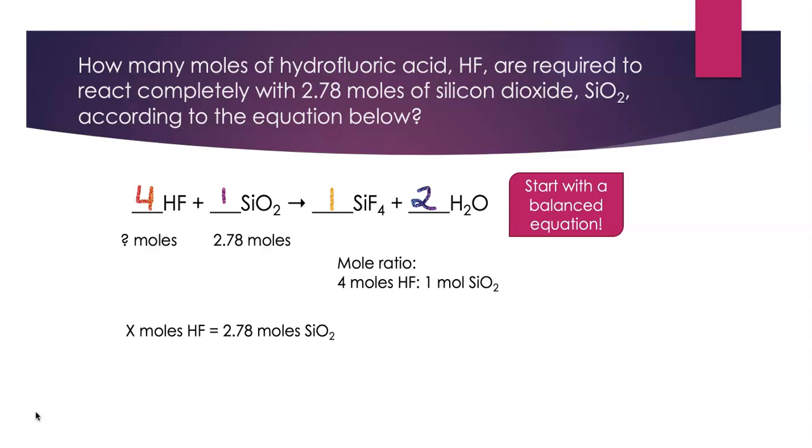X moles HF equals 2.78 moles of SiO2. So now I need to think about my conversion factor with the mole ratio. I want moles of SiO2 to cancel out, leaving me with moles of HF. So I'm going to write four moles of HF over one mole SiO2, because now my moles SiO2 cancel, which is what I was looking for, leaving me with moles of HF as the unit.